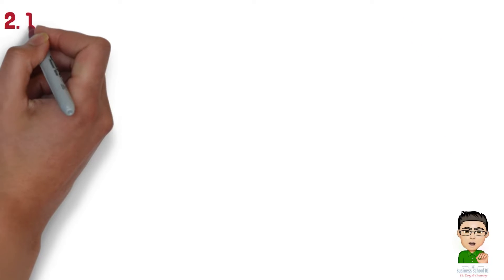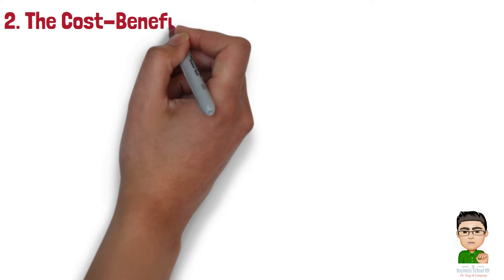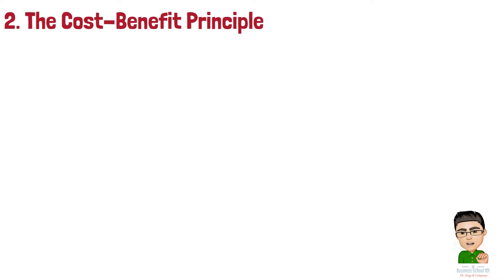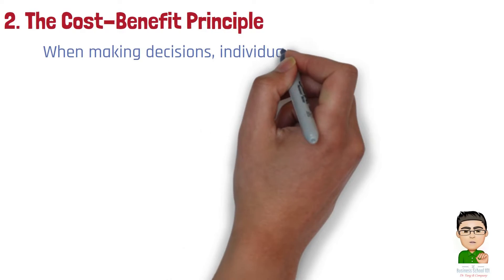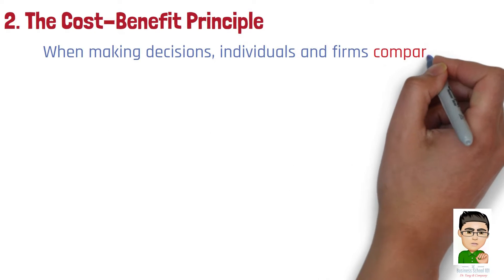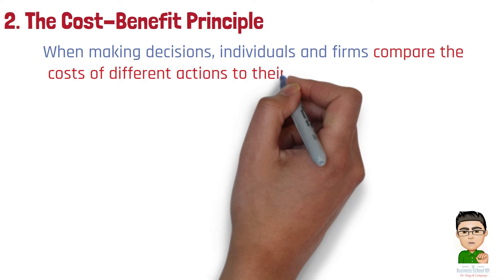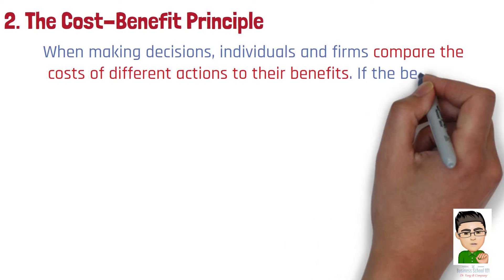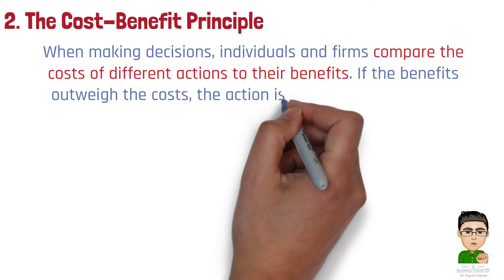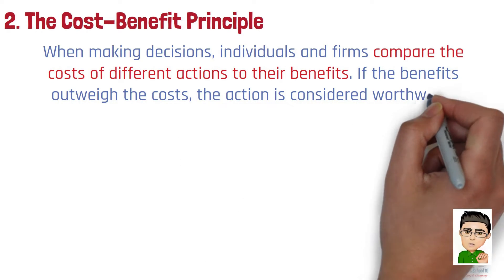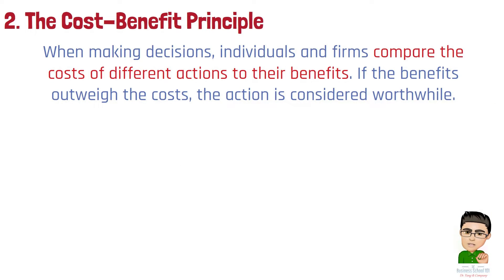Number 2: The Cost-Benefit Principle. When making decisions, individuals and firms compare the costs of different actions to their benefits. If the benefits outweigh the costs, the action is considered worthwhile. This principle is fundamental in evaluating projects, policies, and personal choices.